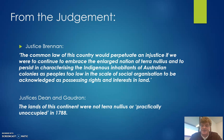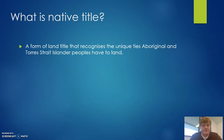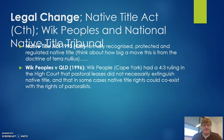Two of the other justices made a very simple statement: 'The lands of this continent were not terra nullius or practically unoccupied in 1788.' So that's the judgment — a very significant judgment, some 200 years after the doctrine of terra nullius was imposed. This leads us to the idea of native title: a form of land title that recognises the unique ties that Aboriginal and Torres Strait Islander people have to their land.